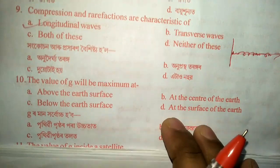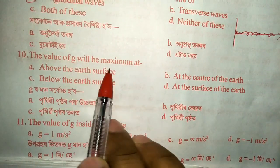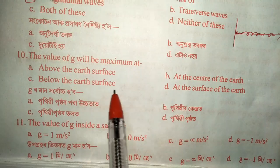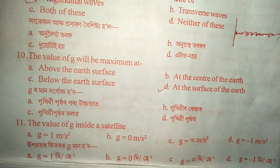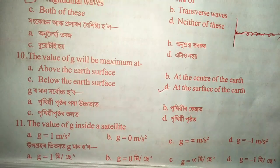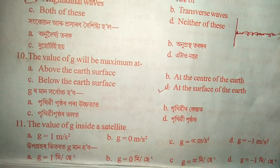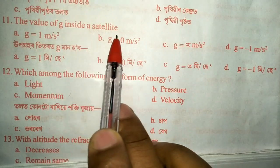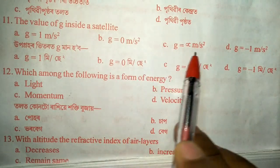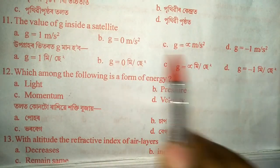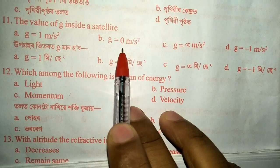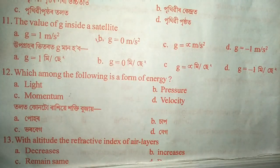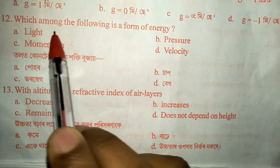Question number ten: where will the value of g be maximum — above the earth's surface, at the center of the earth, below the earth's surface, or at the surface of the earth? The answer is option D — at the surface of the earth. When you go deeper, g decreases and becomes minimum. Question number eleven: the value of small g inside a satellite. The options are 1, 0, infinity, and minus 1. It is not exactly zero but very nearly zero, and since zero is the closest option available, the answer is B.